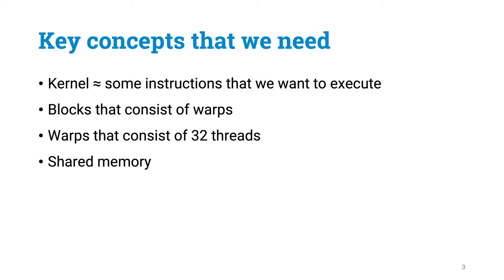We already know almost all key ingredients that we need. We have kernels, we have blocks of threads and warps of threads. The hardware organizes threads always in warps of size 32, while you as a programmer can organize threads in larger blocks that consist of many warps. And we have the concept of shared memory.